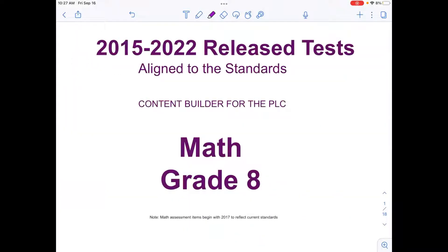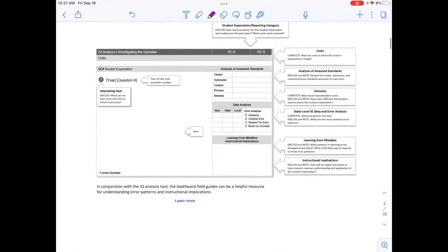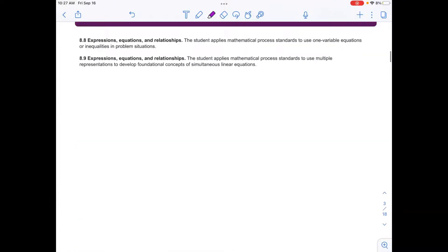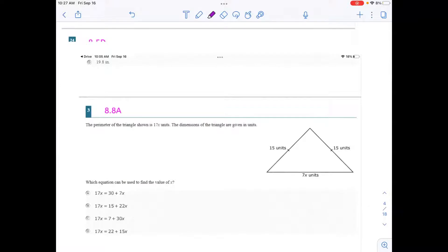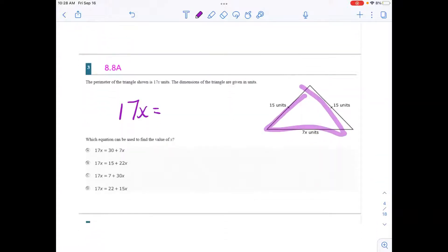This document is going to be our STAR-released questions. However, some of the 2022 questions aren't on there, so I had to go digging for those. For equations and inequalities in the past, I'm going to look at both 8.8A and C together. So 8.8A is the one where students were needing to actually write equations. So the perimeter of the triangle shown is 17 units. The dimensions of the triangle are given in units. So we have our units here, and they're saying that the total perimeter there is 17x.